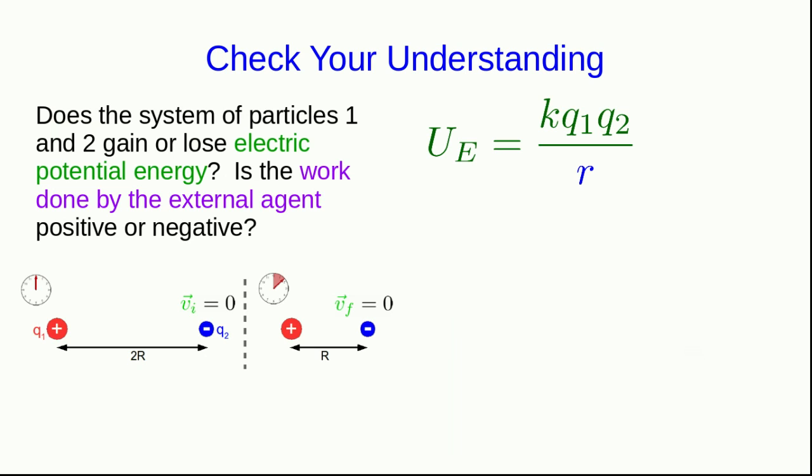Let's think about the potential energy of this pair of particles. It's given by the kq1q2 over r formula. Note that q1q2 here is negative because q1 and q2 have opposite sign, and so we know the potential energy is negative.